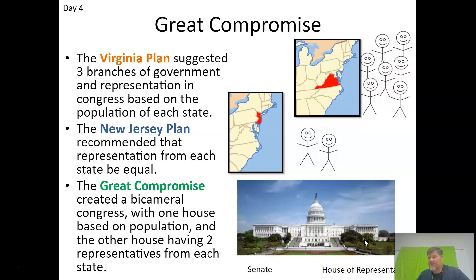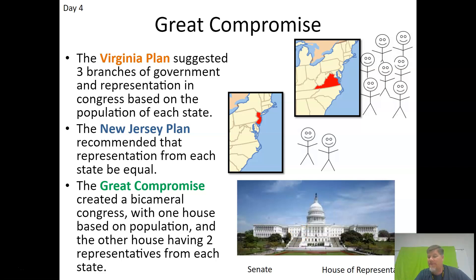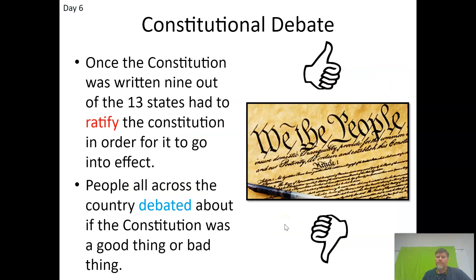In the Great Compromise, the House of Representatives is based on population — making larger states happy — while the Senate gives equal representation with two senators per state, satisfying the smaller states. This is also why we have a census every ten years to count the population and determine how many representatives each state gets. The 2020 census results just came out, and Texas is actually adding one more member of the House of Representatives, while some states are losing representatives.